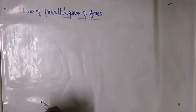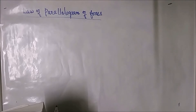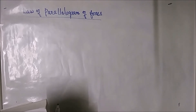In this video, we will be looking at the Law of Parallelogram of Forces. The definition is: if two forces acting simultaneously on a body at a point are represented in magnitude and direction by two adjacent sides of a parallelogram, then the resultant is represented in magnitude and direction by the diagonal of the parallelogram which passes through the point of intersection of the two sides representing the forces.